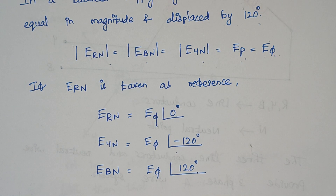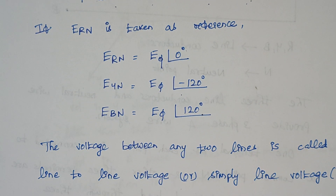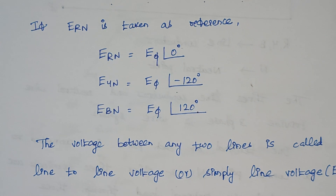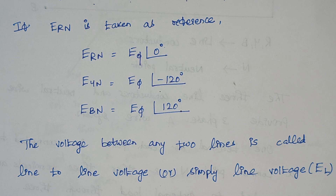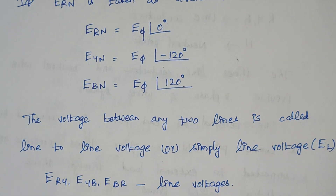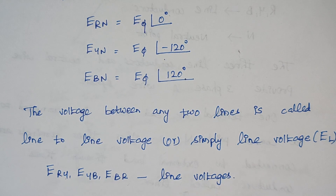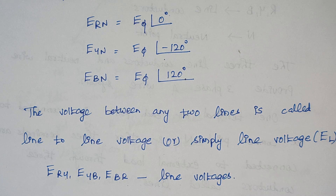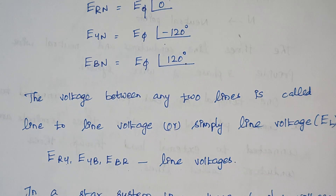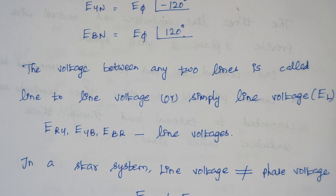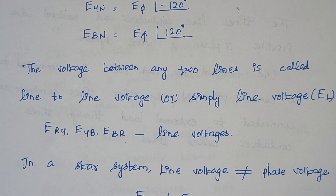Now, what is meant by line voltage? The voltage between any two lines is called line-to-line voltage or simply line voltage, denoted as E-L. It may be between R and Y, R and B, or B and R. These voltages are known as line voltages. In a star system, the line voltage is not equal to the phase voltage. The line voltage is E-R-Y while the phase voltage is E-R-N — both these voltages are different in a star network. This is an important point to be noted.